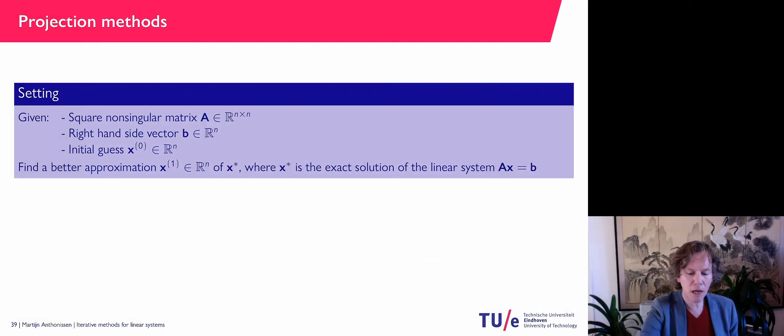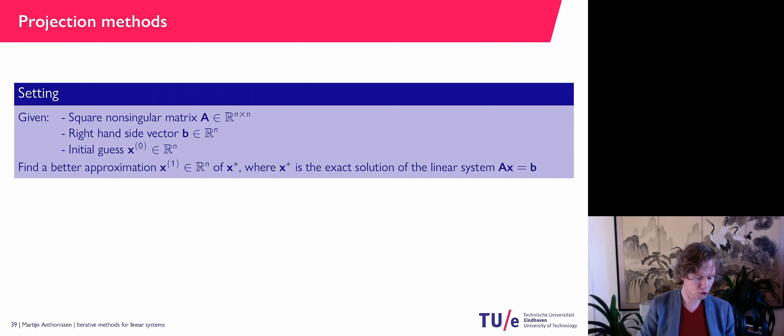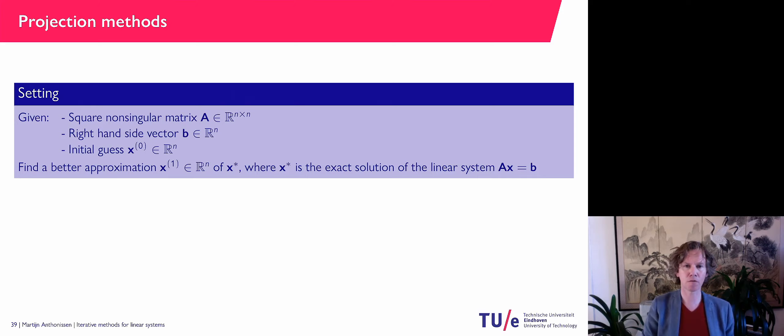The situation is as before: we have a square non-singular matrix A, a right-hand side b, and we're trying to solve the system Ax = b, starting with some initial guess x₀. When we were talking about Jacobi, Gauss-Seidel, and so on, we always described how to get from x_k to x_{k+1}. Here I'm going to start with x₀ and describe how you can find x₁ — so I'm going to describe one step of the solution method.